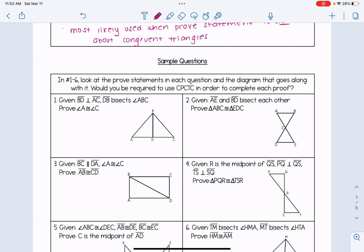So in number one, the proof statement is that angle A is congruent to angle C. That is not about congruent triangles. So in this one, yes, we would use CPCTC. So again, that's what we're answering here. Would we be required to use CPCTC? And we'll look at some full proofs in just a minute so that you could see how it would be applied.